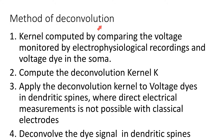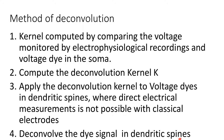The topic of this video is the method of deconvolution of dye dynamics, with the goal of studying voltage in neuronal microdomains. The method is decomposed into four steps. The first step is to compute what is called the kernel, by comparing the voltage monitored by electrophysiological recording in the soma with the voltage dye signal. The second step is to precisely compute this kernel based on the soma recording. Then we apply this deconvolution kernel to voltage dyes recorded in the dendritic spine where direct electrical measurement is not possible with classical electrodes. Finally, I will explain how to deconvolve the signal from dyes recorded in these dendritic spines.